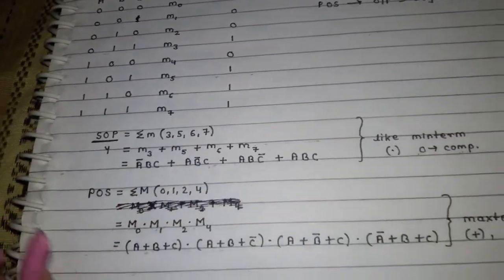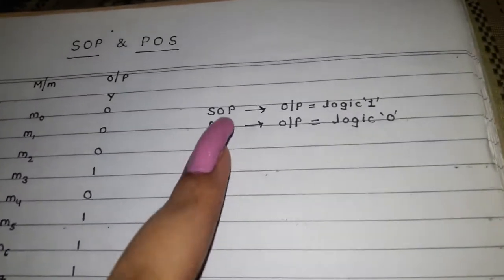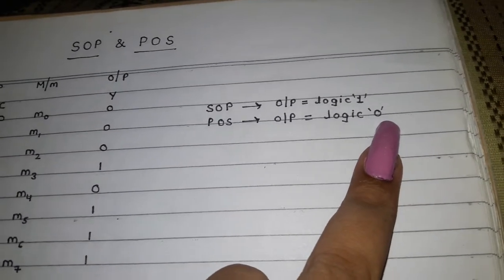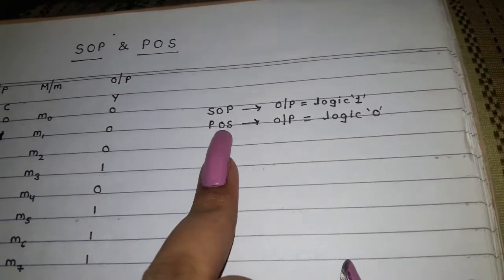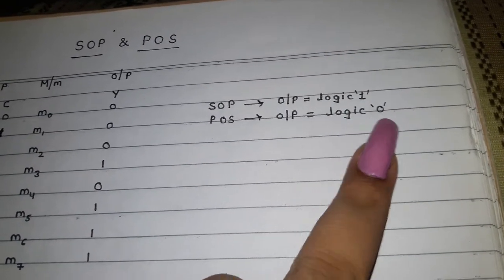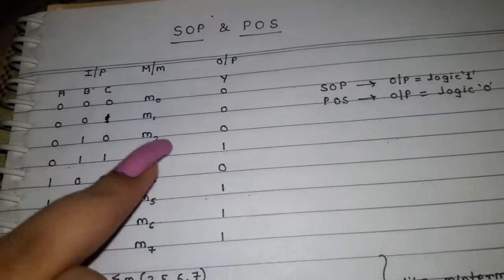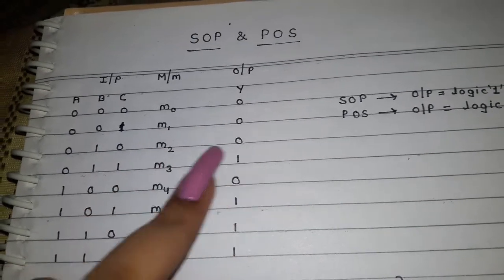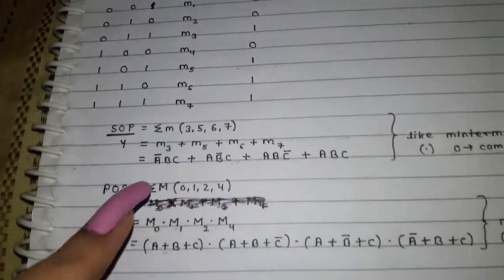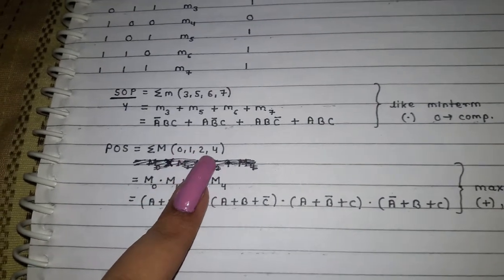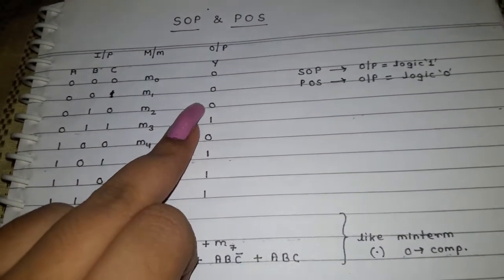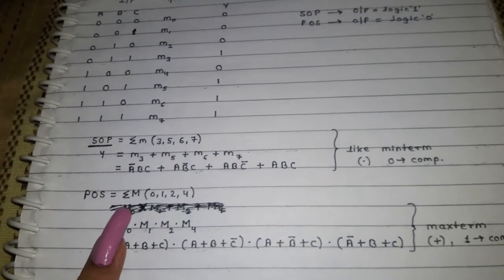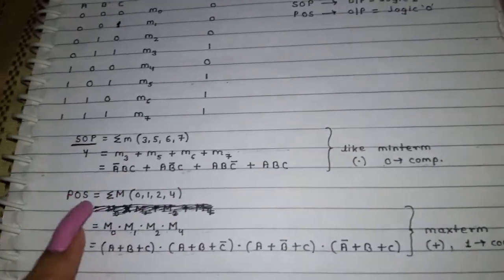Now we shall discuss POS form. For POS form, we take that output into consideration whose logic is zero — just the vice versa of SOP form. Here you can see M0, M1, M2, and M4 are the zeros. So for writing POS we are having 0, 1, 2, and 4 — these are your zeros, and for POS we take the output whose logic is 0.